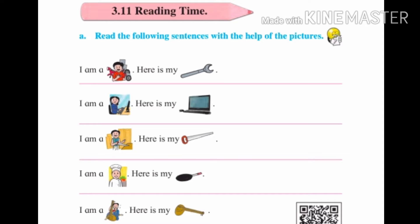Now we see the first sentence: I am a mechanic. Here is my wrench. Here we can see the picture of a mechanic, and we know this is the tool of a mechanic. The name of that tool is wrench. So the final sentence is: I am a mechanic. Here is my wrench.